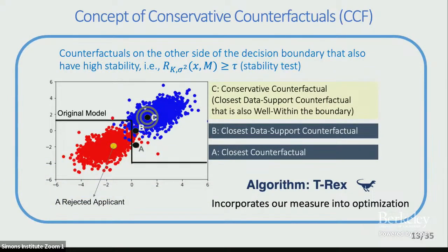Now we have a measure — how do we integrate it into an algorithm? In our algorithm, we introduce the concept of conservative counterfactuals. The closest counterfactual A is just the closest point on the other side of the boundary. The closest data-supported or realistic counterfactual B is on the other side and also on the data manifold. The conservative counterfactual is on the data manifold, on the accepted side, and also somewhat well within the decision boundary. We incorporate relaxations of this measure into an optimization formulation and propose an algorithm called T-Rex — Theoretically Robust Explanations — where the robustness measure is incorporated as a constraint in the optimization.